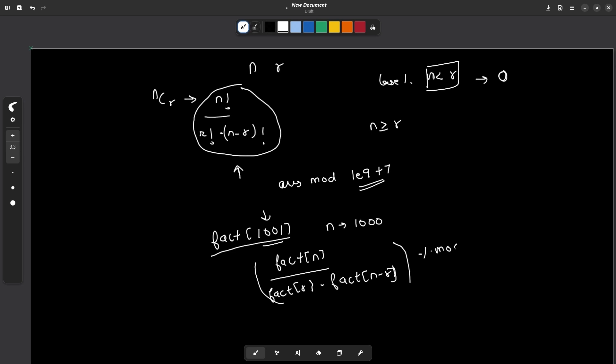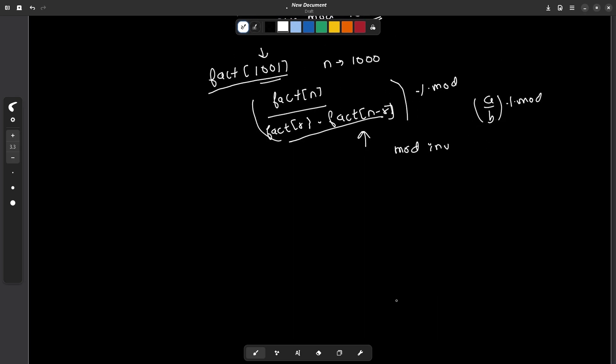But the only problem that we have in this particular part is that we have to calculate this whole value modulo something, and we cannot do it directly because this particular value is in the denominator and we don't have any formula for a by b modulo something. We will have to take the denominator and calculate its mod inverse.